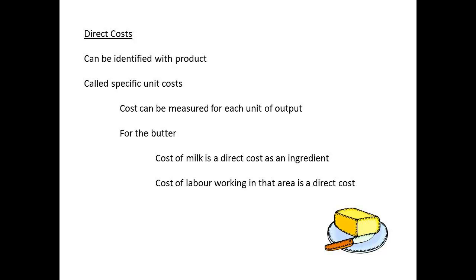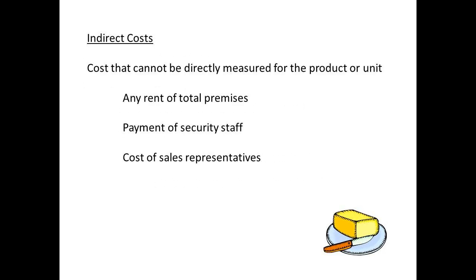For the butter, we can say that milk as a raw material is a direct cost. If the labour only produces butter, then the cost of that labour is also a direct cost. Indirect costs cannot be measured directly for the unit, and they will be shared among all the products that are being produced. These include the costs of rent and of staff who are associated with sales, or with an activity such as security of a plant.